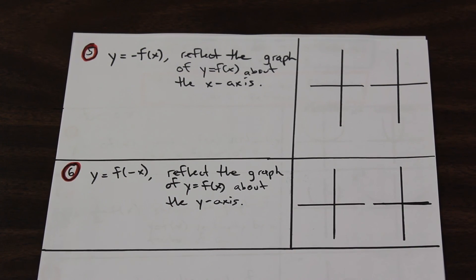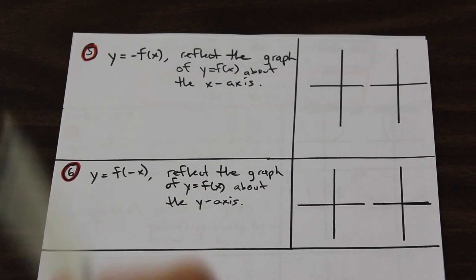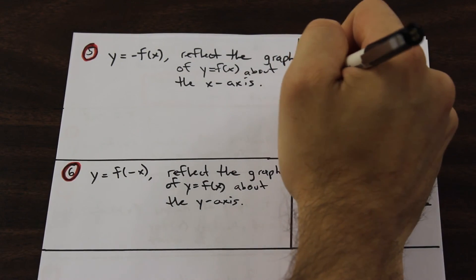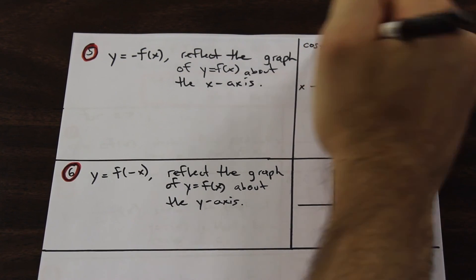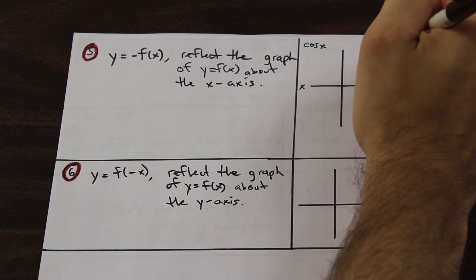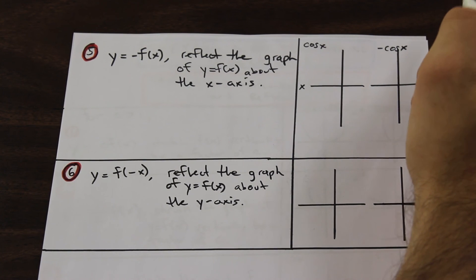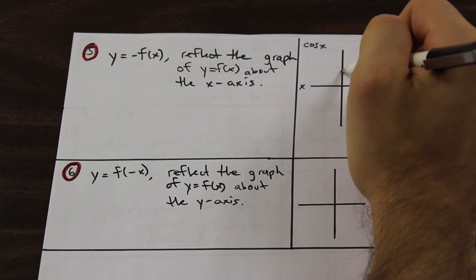But let's just take a look at these two. So we have y equals negative f of x, and we're going to reflect it about the x-axis. So this is the x-axis here. And let's do cos. So we have cos x, and then we have negative cos x.